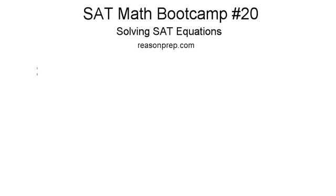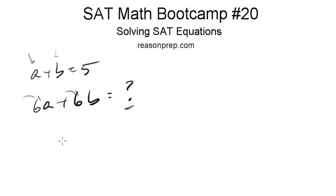Let's say the SAT said this: if a plus b equals 5, then what is 6a plus 6b? You might say to yourself, well this looks like two equations with two unknowns. I've got to maybe stack these up and add them and subtract them, but how do I do that? I don't have this number. Am I supposed to find a and then b and then once I've found a and b, plug it into these guys? What am I supposed to do?